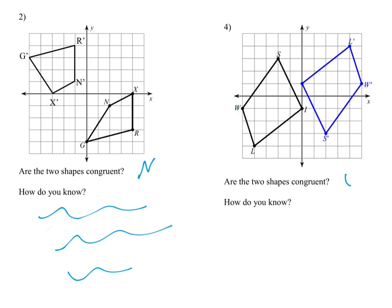On number four, these are congruent — it's just a 180-degree rotation, so they're the same shape and size. And that leads right into the next page: certain transformations keep the shape the same, and certain ones don't.